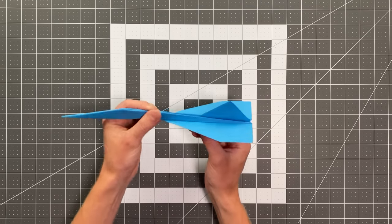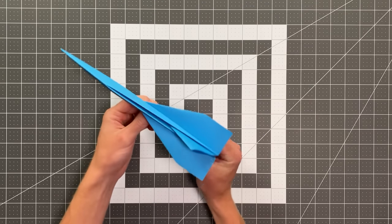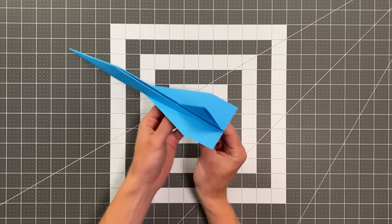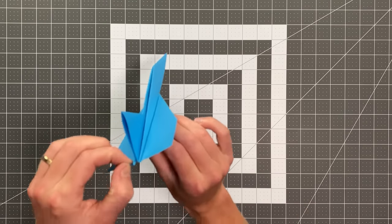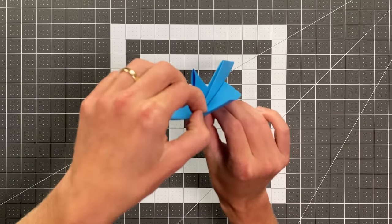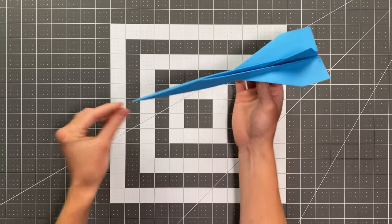You will probably need some up elevator on the back of this plane to make it fly best. Which means you just bend the back edges up a little bit. And that will help it to glide rather than nose dive. So you're just bending those edges up. And there you go.